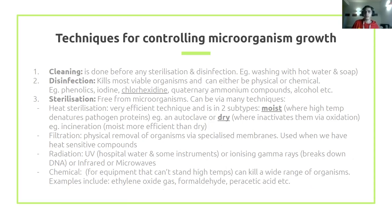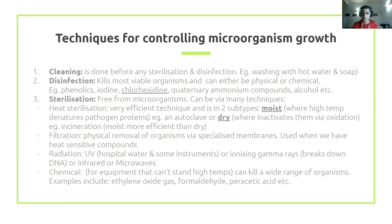We have techniques to minimize microbial growth, especially important in hospital settings. There are three levels of control. The first is cleaning — washing with soap and water before any sterilization or disinfection. It's the most basic level and doesn't kill everything. The second is disinfection — more important for items contacting mucous membranes rather than sterile environments like blood. Common agents include phenolics, iodine, chlorhexidine, ammonium compounds, and alcohol swabs.